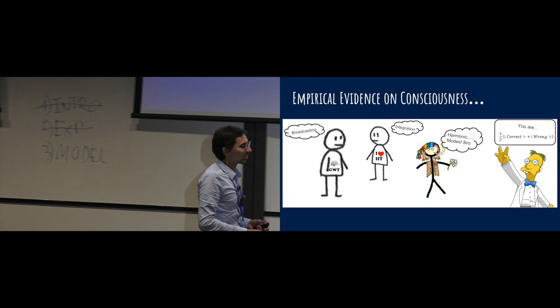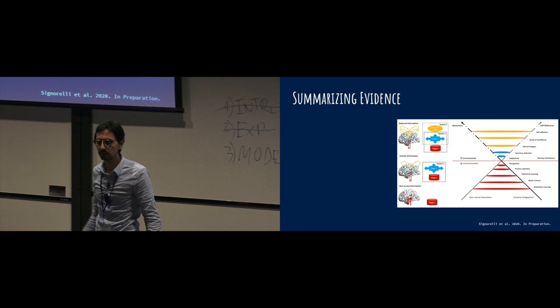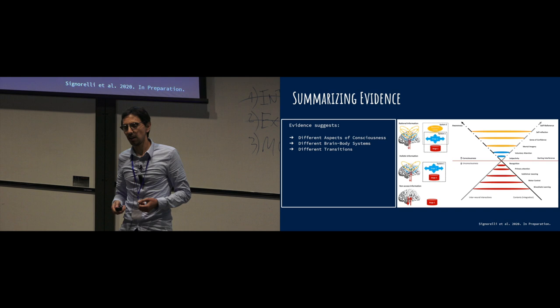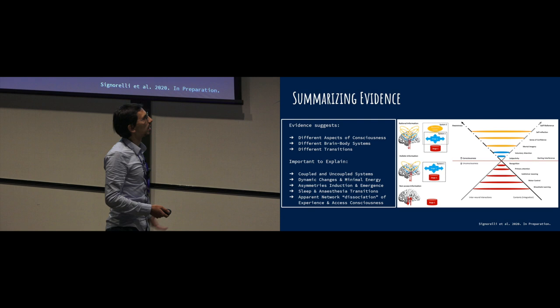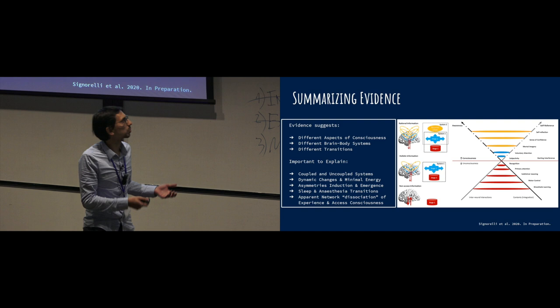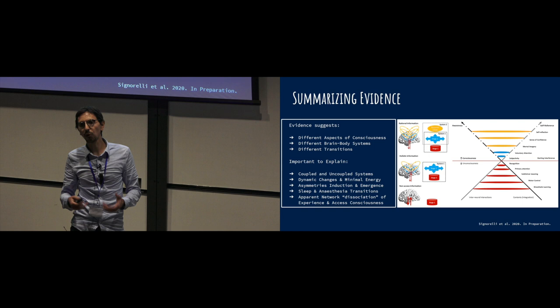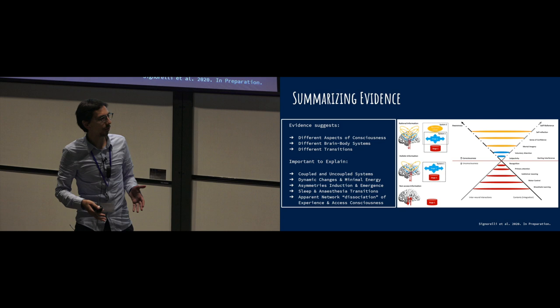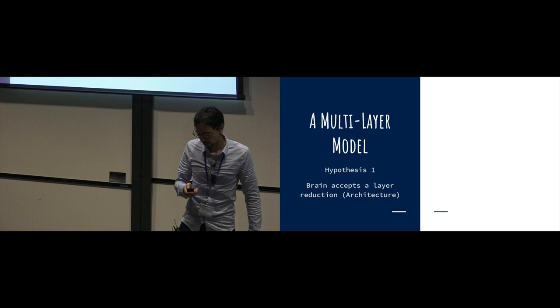Summarizing all this evidence can suggest different aspects of consciousness, different brain-body systems, and different transitions. We would like to explain all of them in one theory. Or at least I would like to do it. We need to explain how these systems interact. We would like to explain the asymmetries between induction and emergence in anesthesia, the differences between sleep states and anesthesia, and also the apparent network dissociation of experience or dreaming experience, access consciousness, and self-reference.